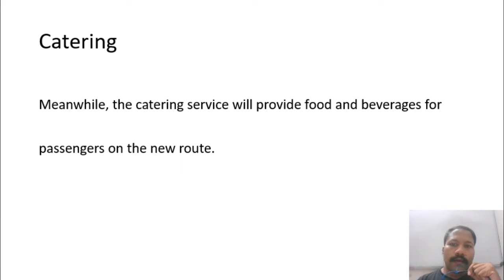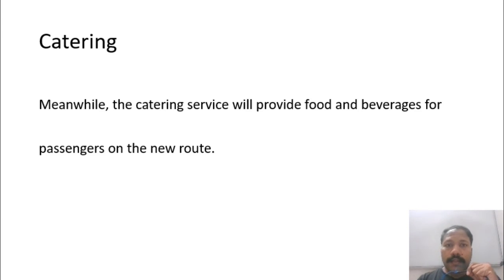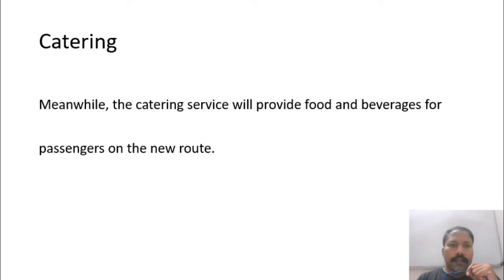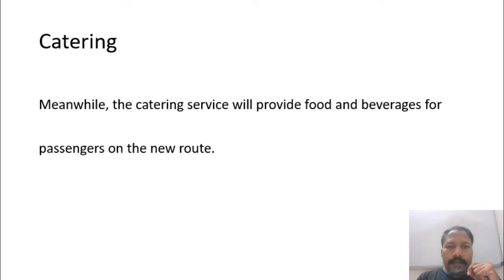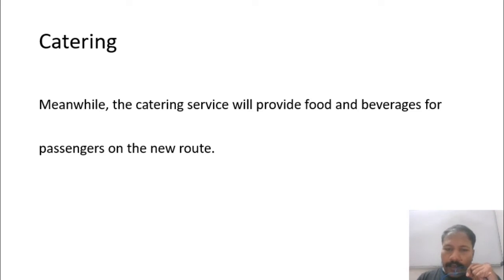Step seven: catering. Food and beverages are loaded onto the airline for the upcoming passengers and for the new route. If the journey is less than four hours, less food is added. For low-cost carriers, catering is typically absent, as they only offer seats and tickets — other services are add-ons. Catering involves loading food and other materials into the vehicle.